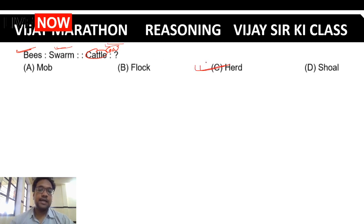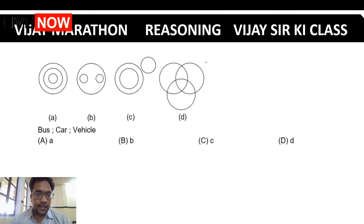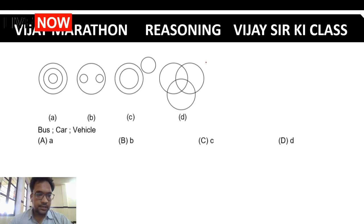A herd — herd is used for cows. For bus, car, and vehicle — which Venn diagram will be correct? The answer is option D for bus, car, vehicle Venn diagram.